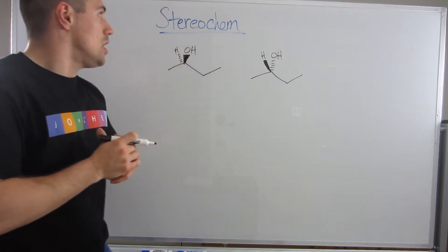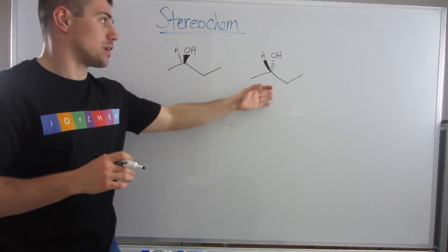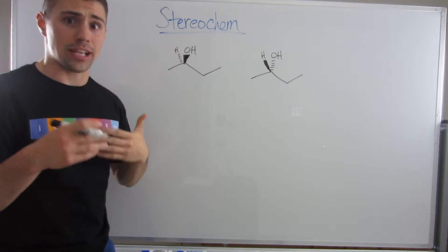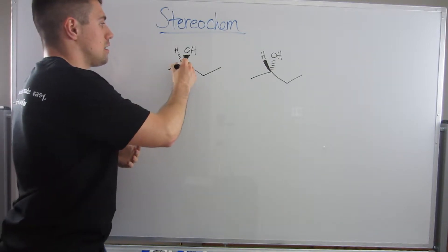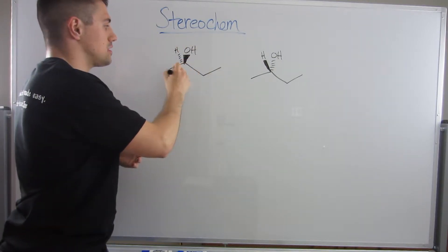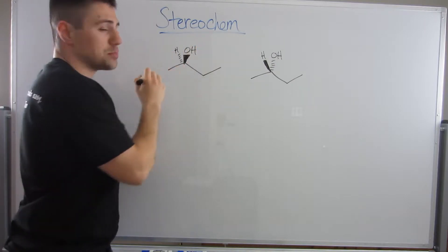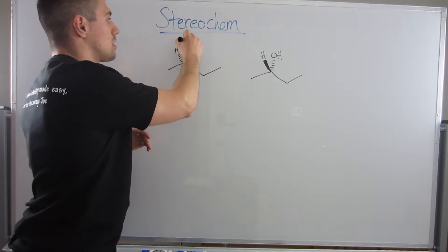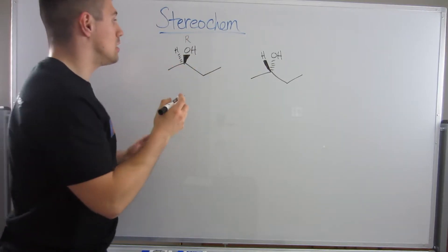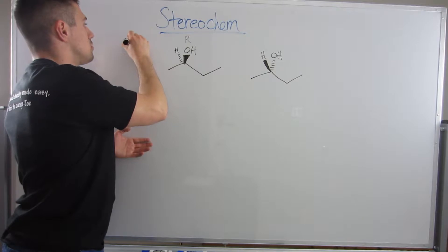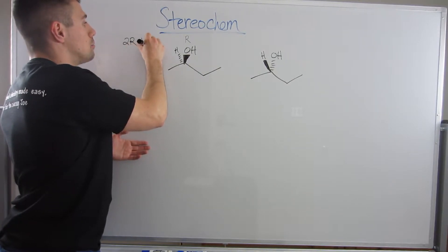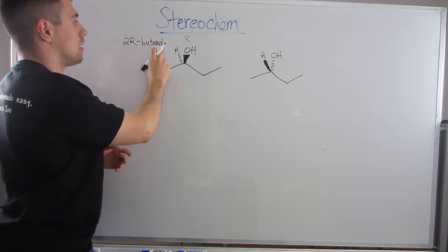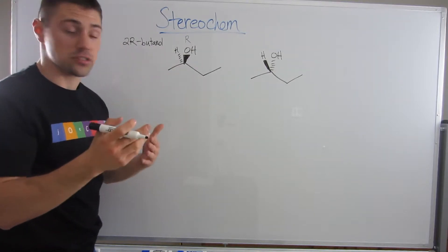Okay, so I drew two structures right here. So if we want to look at them and we can assign R and S real quick, this would be highest priority and this and then this, so lowest priority group would be facing away from us. This looks like R and it is in fact R. So this structure would actually be named 2R butanol, so at the second position of butanol there's an R stereocenter.